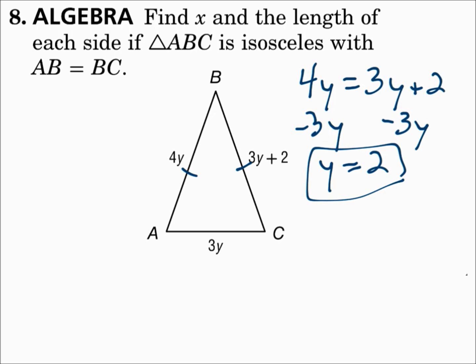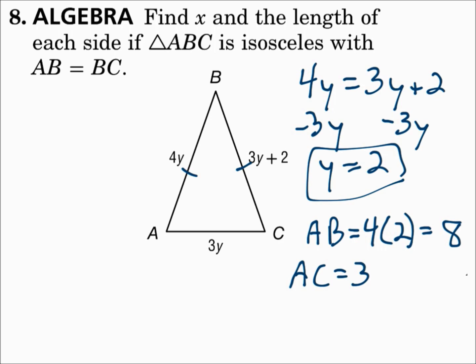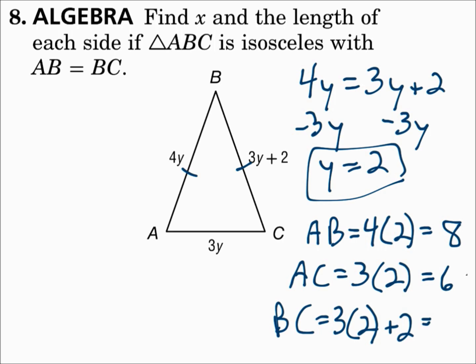Then substitute 2 in for y in each side length. AB = 4y = 4(2) = 8. AC = 3y = 3(2) = 6. BC = 3y + 2 = 3(2) + 2 = 8. AB and BC are both 8, which makes sense because those were the two sides stated to have equal lengths.